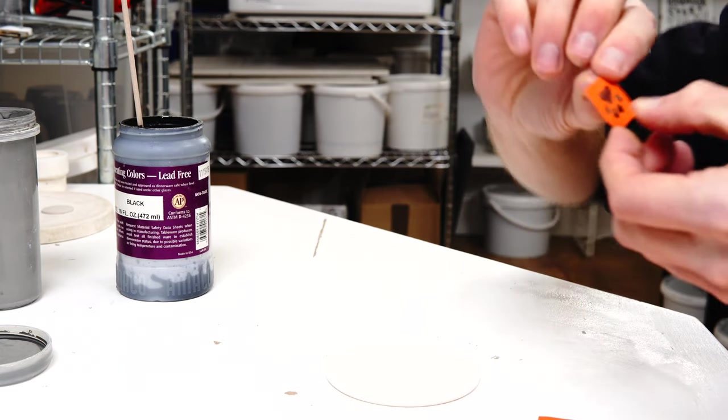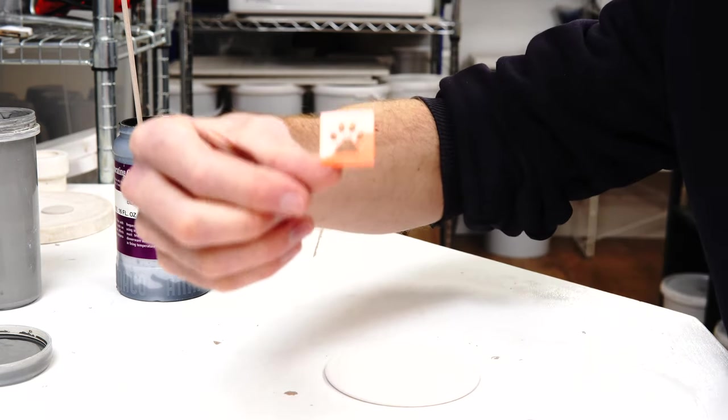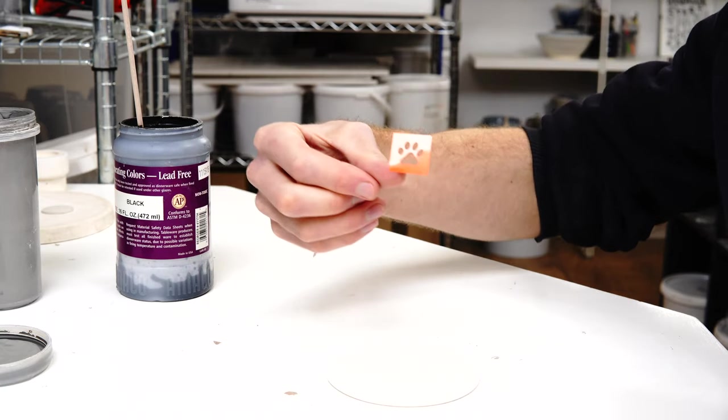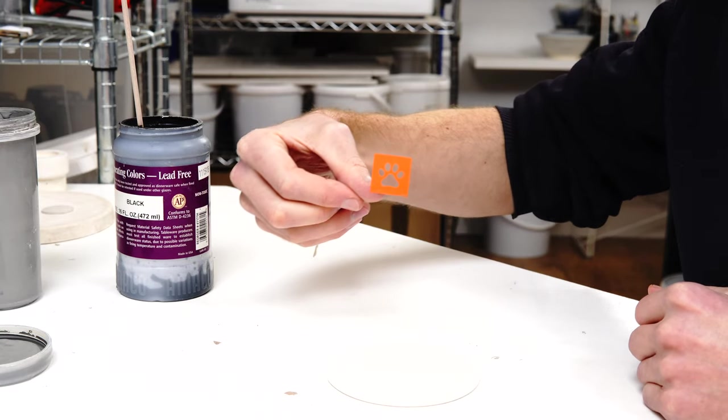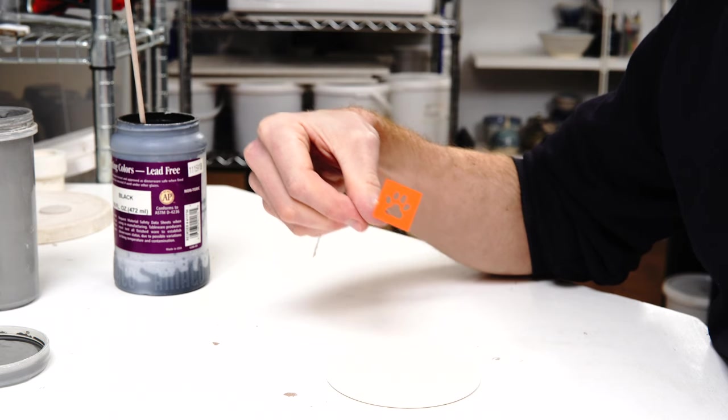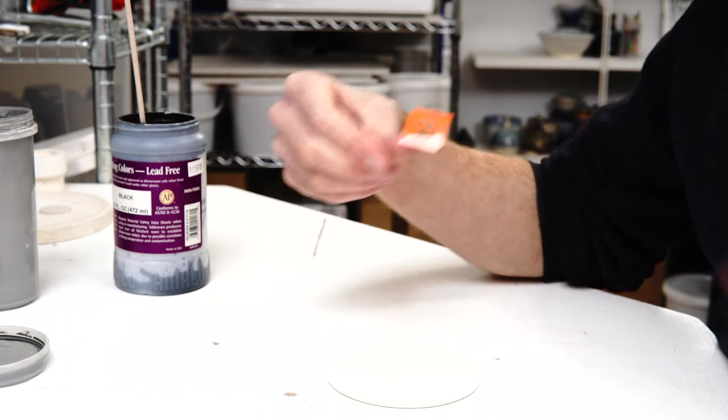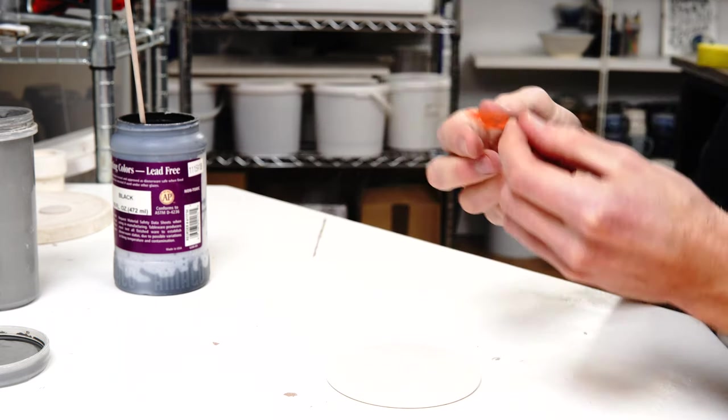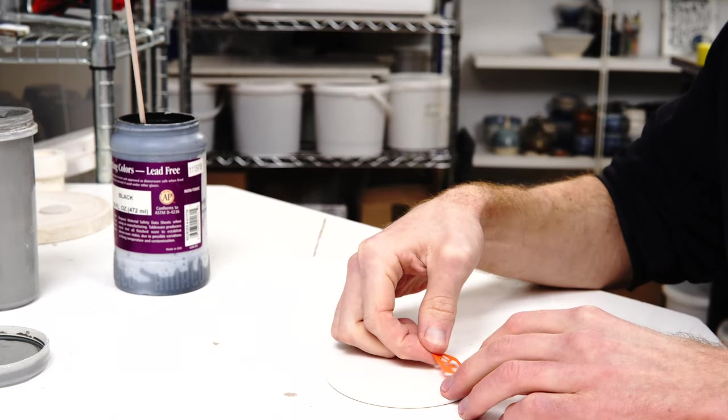It's going to look like that so I've got a paw print. It's going to look like that and I stick that onto a piece. I'm going to do a couple of them before I apply the underglaze.